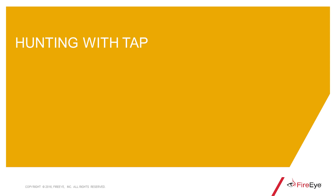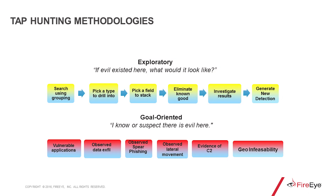Now we get to the meat of the conversation: hunting with TAP. I'm going to discuss a couple different hunting methodologies, and then show you an example of an exploratory hunt. Let's get started. There are two main hunting methodologies within TAP: exploratory and goal-oriented.